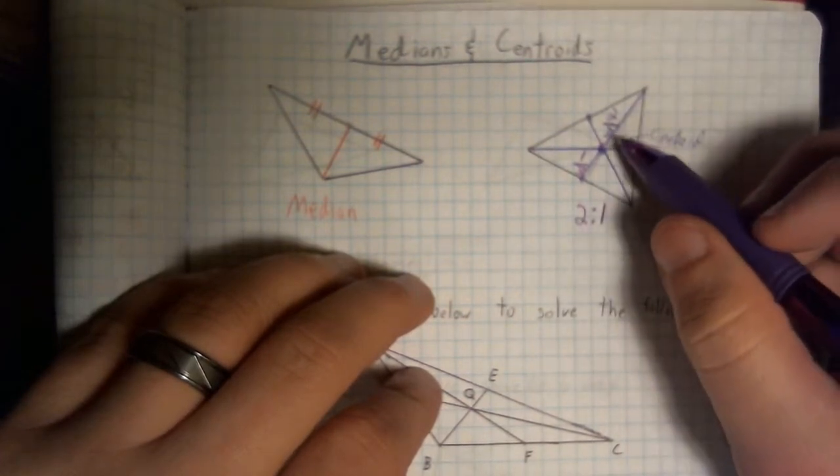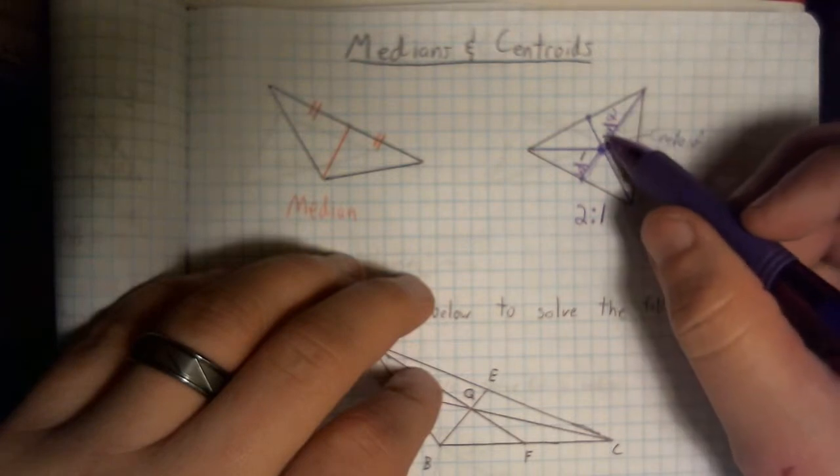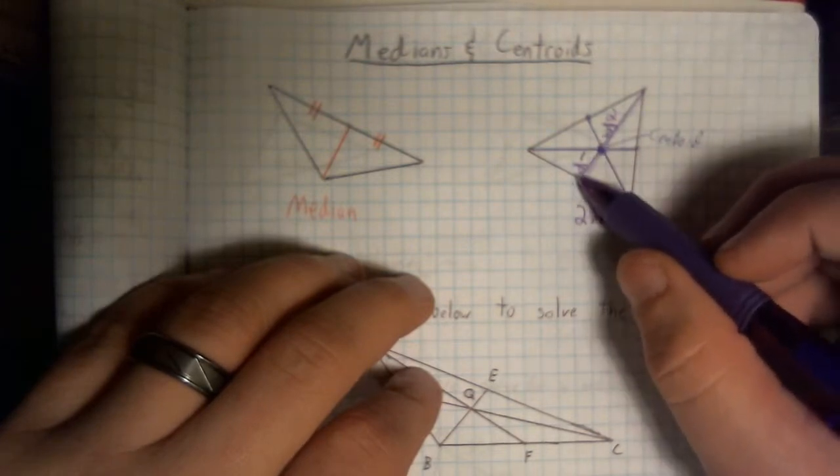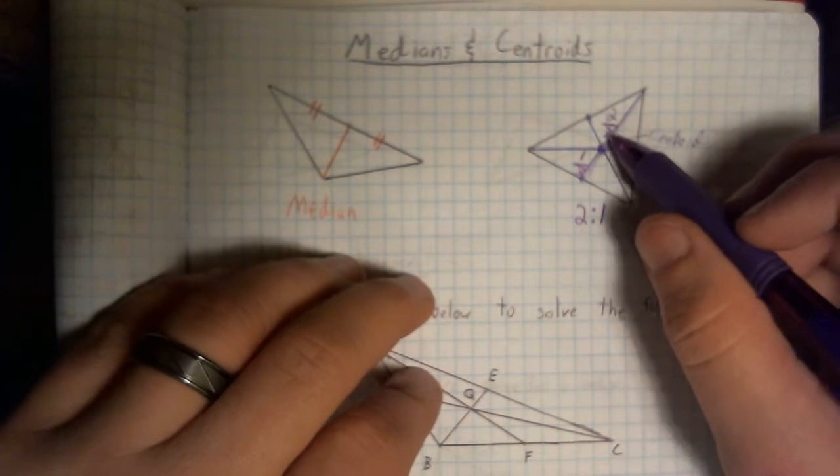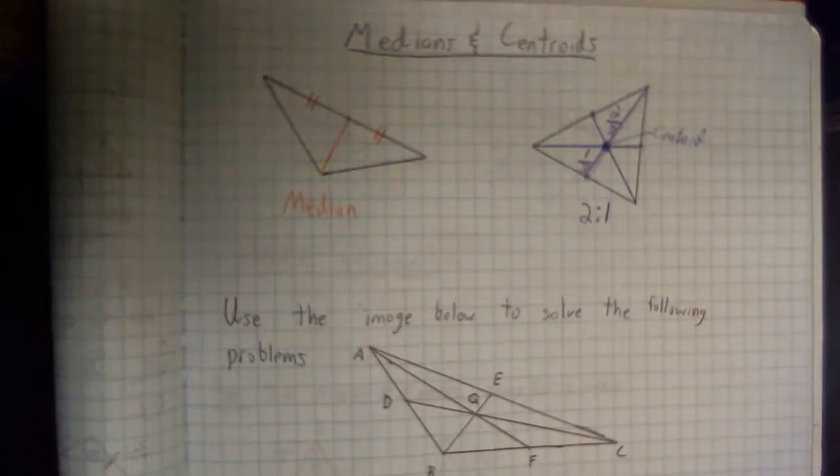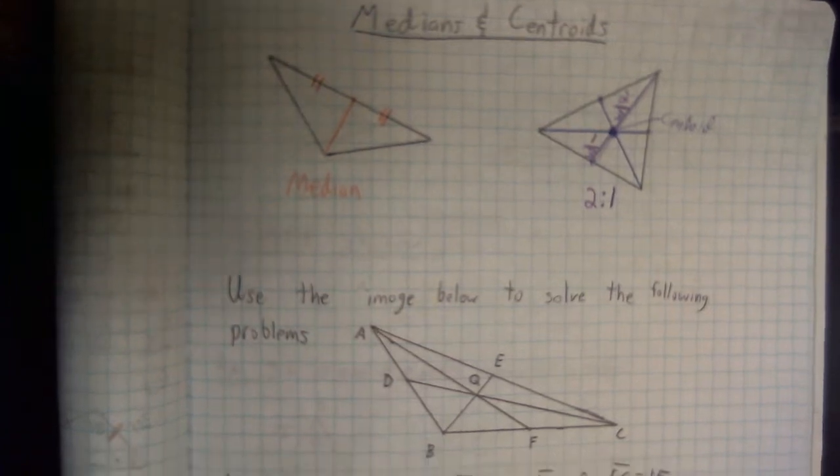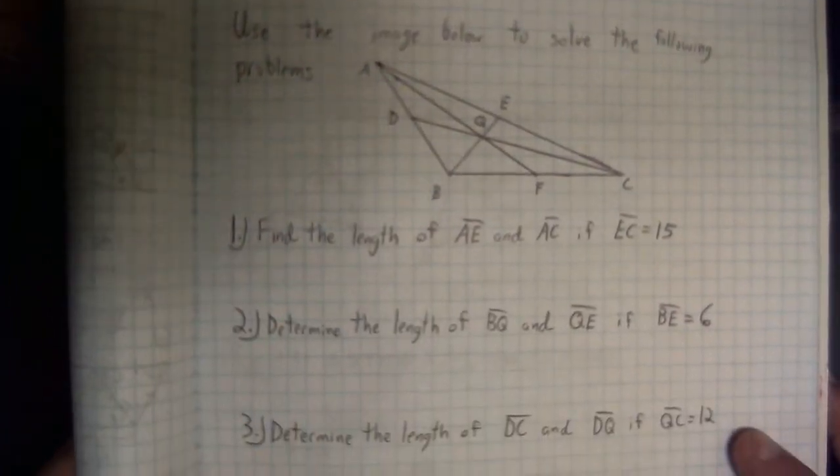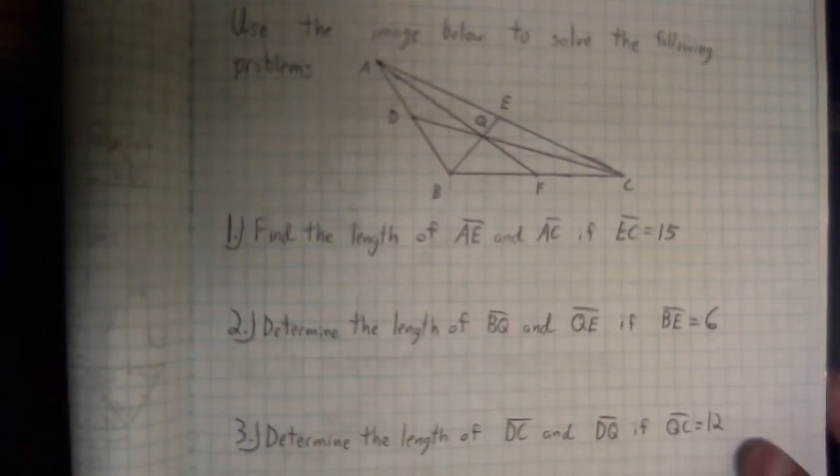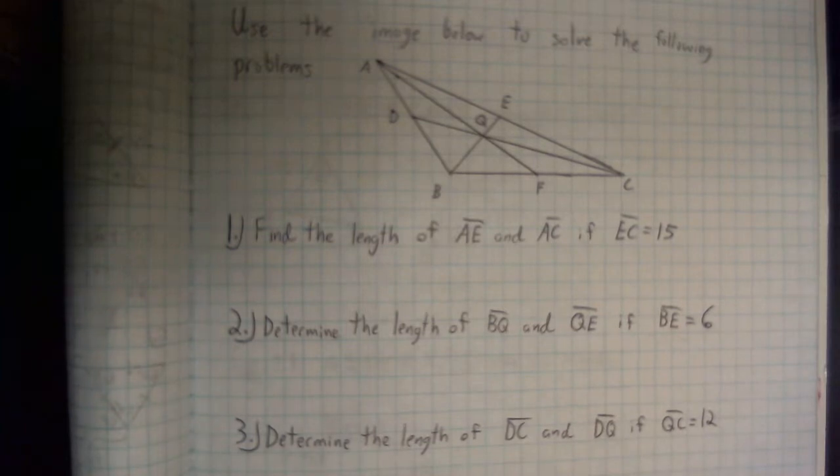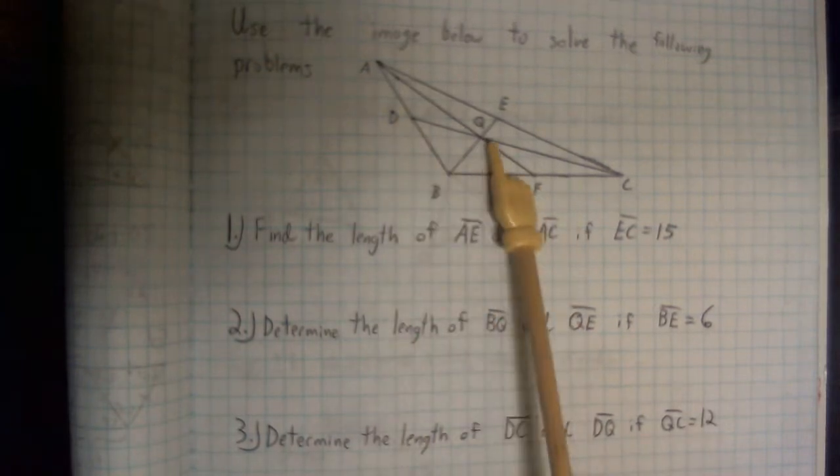That means whatever size this piece is, this has to be half the size. Whatever size this is, this has to be twice the size. It's going to make doing the math on these triangles a lot easier. So, here's an image that we're going to use. If we notice, we have the medians drawn throughout the triangle in our centroid.